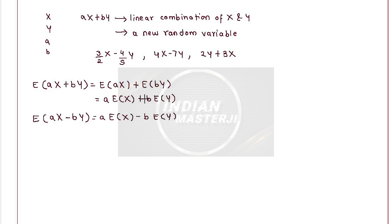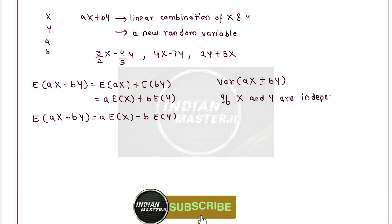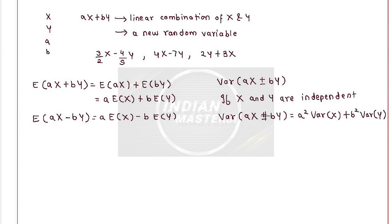If there is a plus sign in the combination, we get plus in the expansion; if there is a minus sign, we get minus. Now, to find out the variance of ax plus or minus by, one thing is very important: if x and y are independent variables, then the variance of ax plus or minus by becomes directly a² times variance of x plus b² times variance of y. Whether the random variable has a plus or minus sign, the variances are always added.